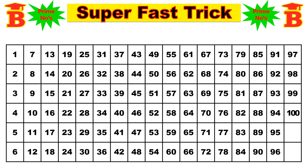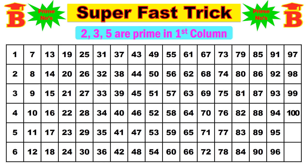Now, we have to write the prime numbers — we can find them very easily. Take the first column. In the first column, 2, 3, and 5 are prime numbers. Note that 1 is neither prime nor composite, so just cross out the number 1. Then: 2 is a prime number, 3 is a prime number, 4 is not a prime, 5 is a prime number, and 6 is not a prime. So in the first column, 2, 3, and 5 are prime numbers.